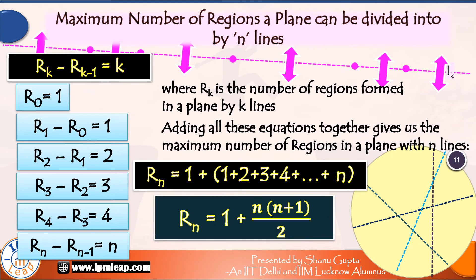So, this equation can also be written as Rn is equal to 1 plus n into n+1 divided by 2. The maximum number of regions formed in a plane by n lines is 1 plus n into n+1 divided by 2.